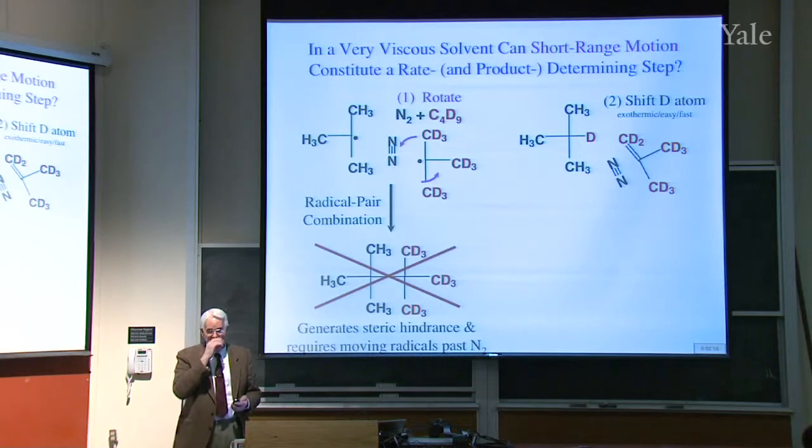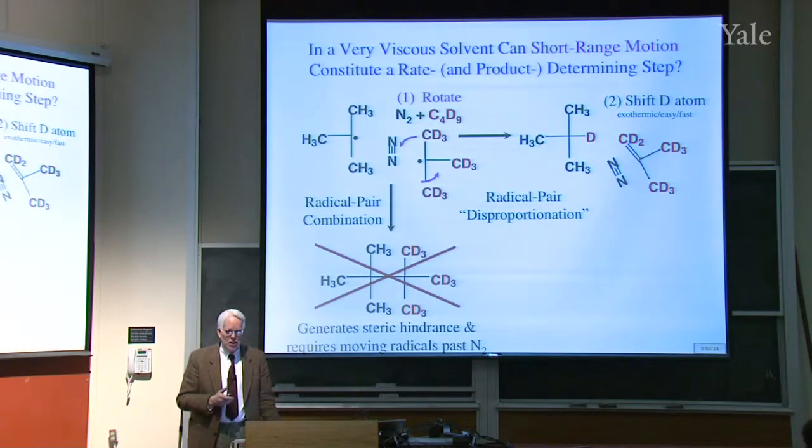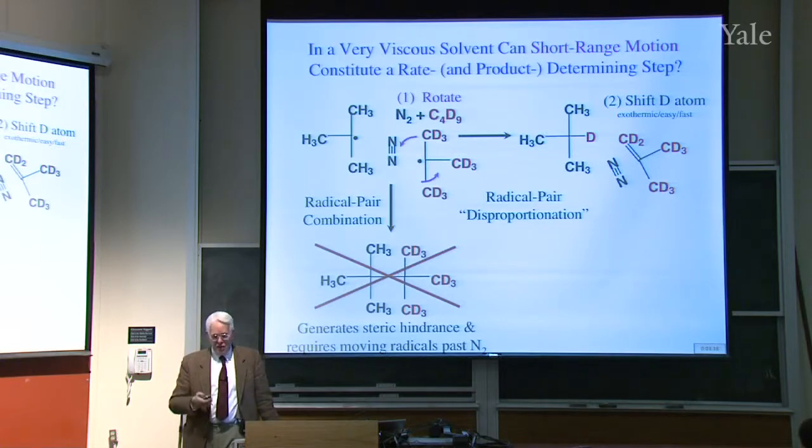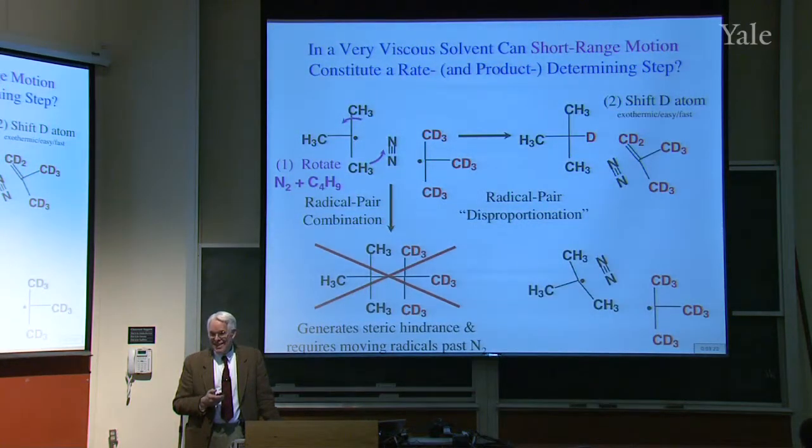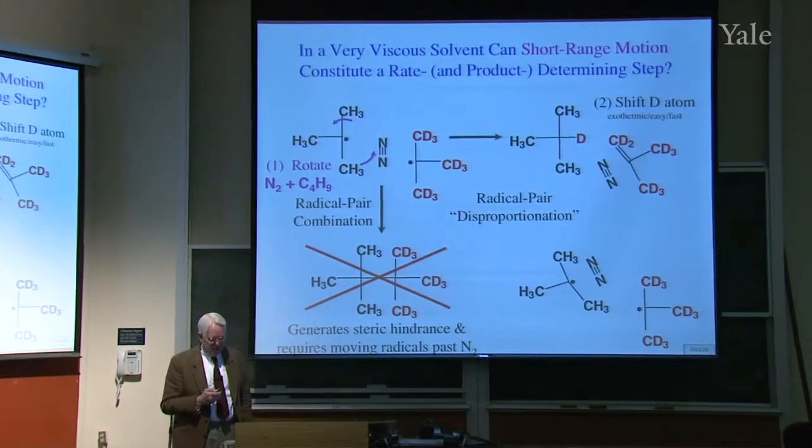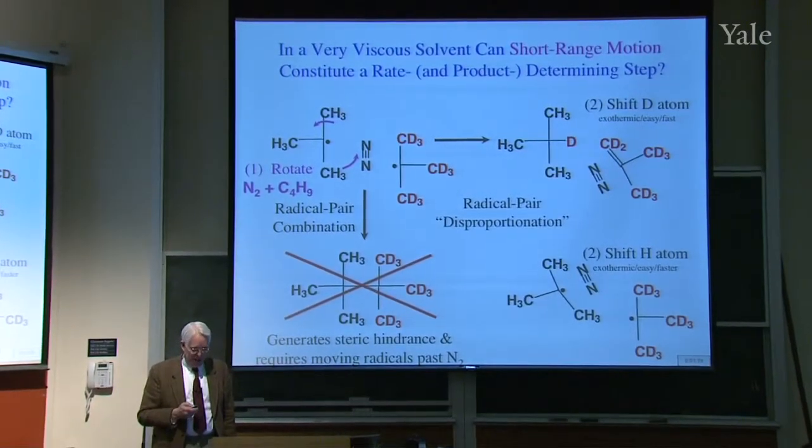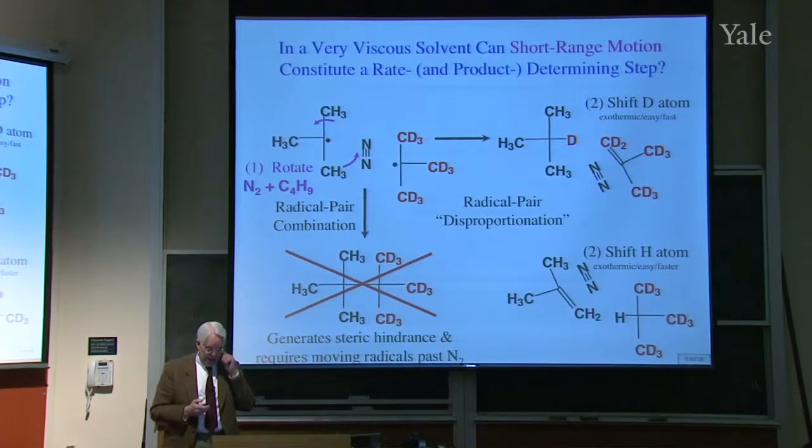There's an alternative reaction for these two radicals. Does anybody see what it is? Besides doing the deuterium atom transfer? What other reaction could you imagine? That particular process is called radical-pair disproportionation. That's another way that radicals can kill one another, besides coupling. The second alternative is to rotate the other group, the one with hydrogens, which would give the geometry down on the right. Then you would transfer a hydrogen atom. That would be very exothermic, easy, fast.